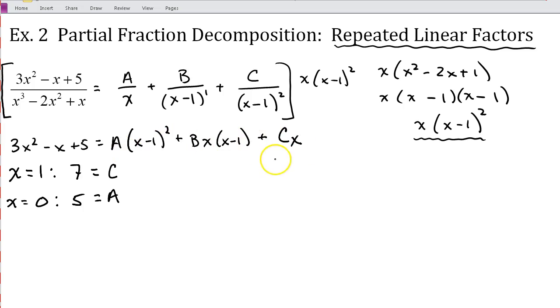And since I don't have any other values that are going to cancel something out, so I'm just left with the middle term, since I already have A and C, I really can pick any value I want. Sometimes just a small value. I'm going to use x is equal to 2 in this case. So if I use x is equal to 2, on the left, when I plug in 2, I'm going to get 15. And then on the right, when I plug in 2, I'm going to have 2 squared. 2 minus 1 squared is 1 times 5, so that'll be 5. Plus, when I plug in 2 here, I'm going to have 2 times 1, so that's going to be plus 2B.